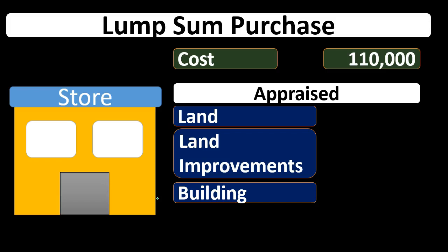For the most part, land doesn't depreciate, so whatever we apply to land will remain there permanently, whereas whatever we apply to the building will depreciate over the life of the building. That's a significant difference. If a company wants to look better on its balance sheet, it would want more of the allocation assigned to land, because the building will decline in value over time and we'll record depreciation expense, bringing down net income. On the other hand, if we want to reduce net income for tax purposes, we might want more allocated to building than land.